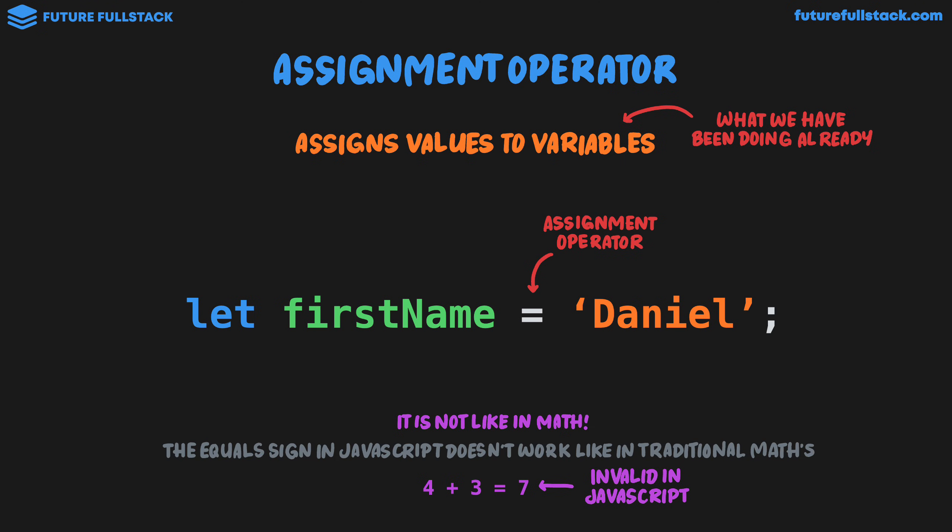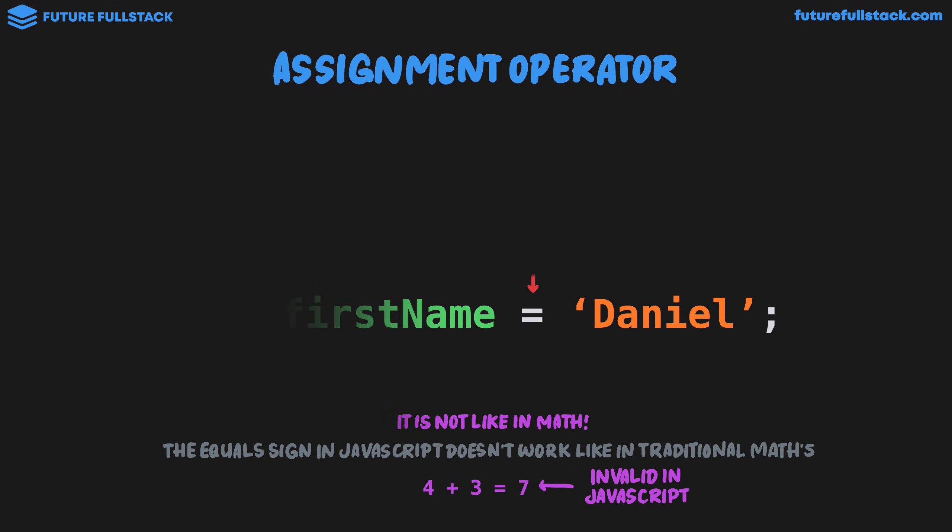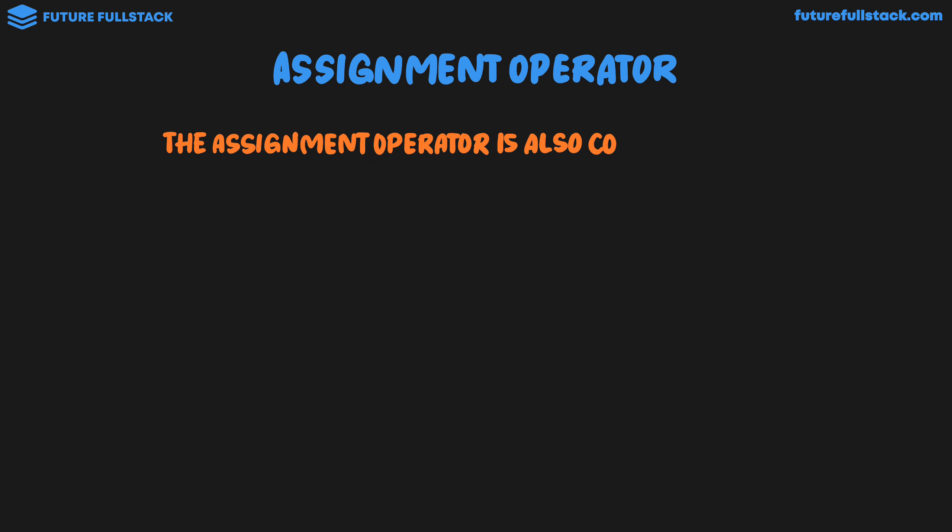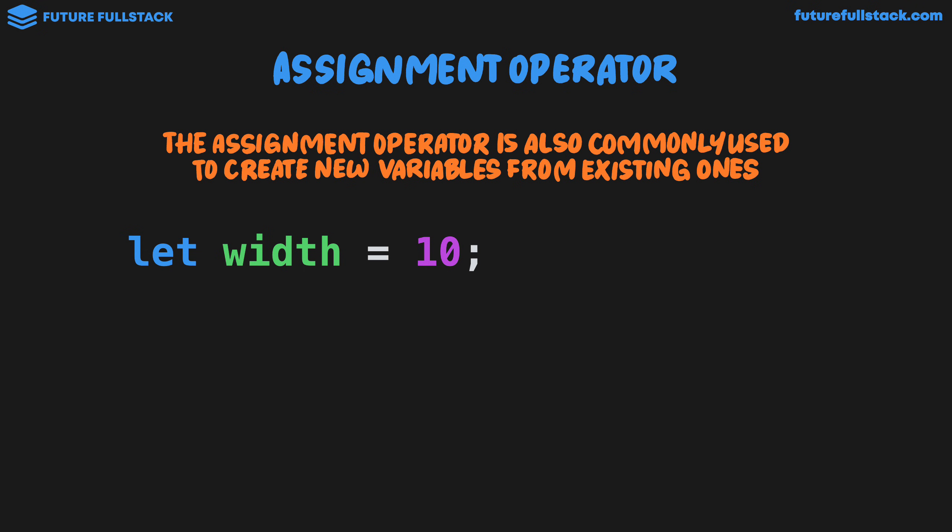We'll be seeing in a later video how we can perform operations of equality. That is seeing if two things are the same. Now the assignment operator is also commonly used to create new variables from existing ones. So for example if we had the variable width equals 10, height equals 20,